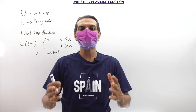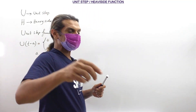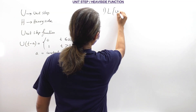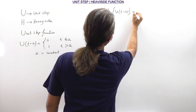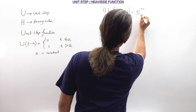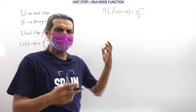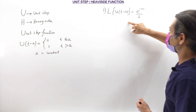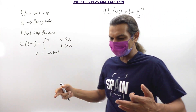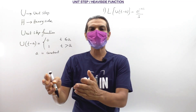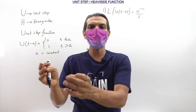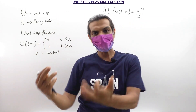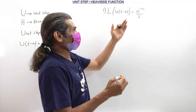Now let's understand the Laplace of these unit step functions. You have basically two properties. The first one is: Laplace of U(t − A) equals e raised to minus As divided by s. So the unit step function is given by U(t − A), and its Laplace is e^(−As)/s. For example, Laplace of U(t − 3): A is 3, so the answer is e^(−3s)/s. Laplace of U(t − 10): A is 10, so the answer is e^(−10s)/s.